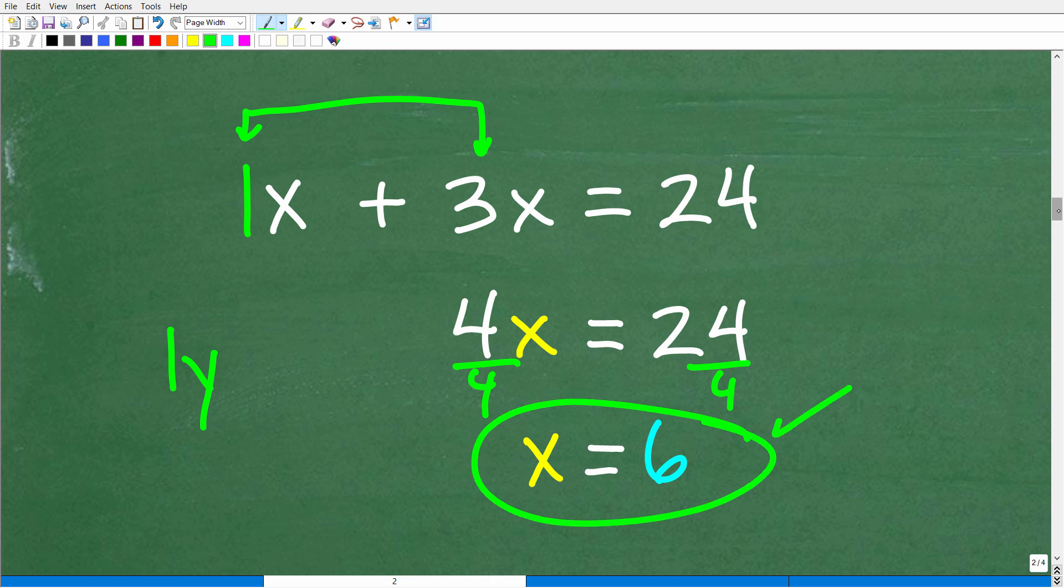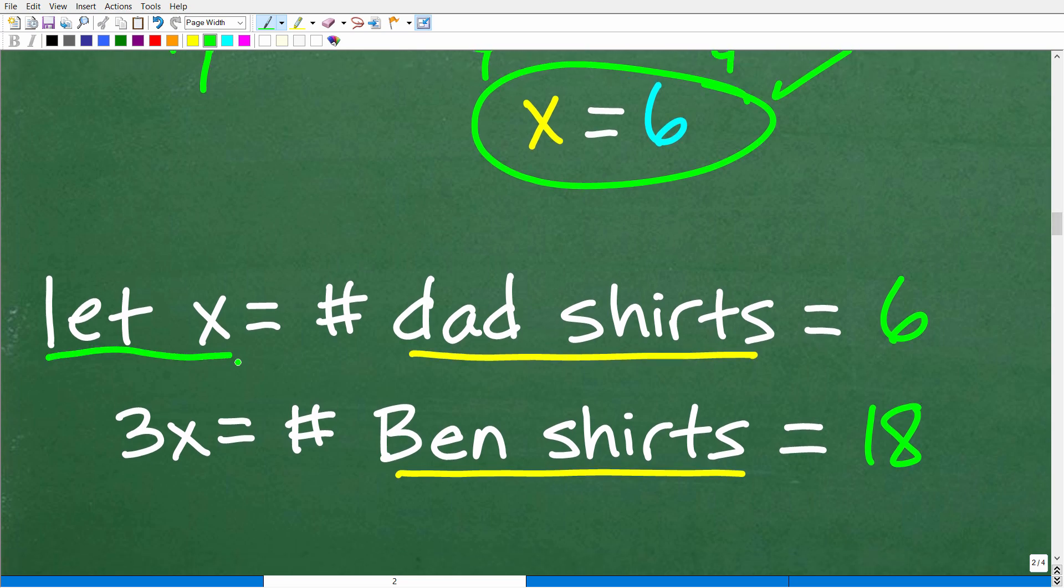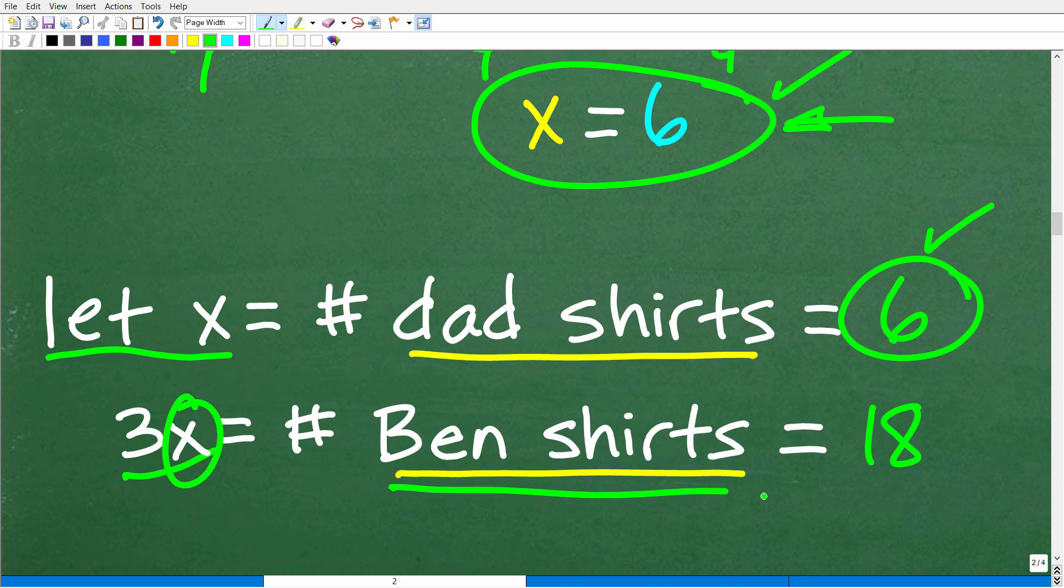X is equal to 6, but what does that mean? We have to go back to our model here. Remember we said we're going to let X equal the number of dad's shirts. We can't fail to answer the question. X was the number of shirts the dad has, so that's 6 and 3X. Now that we know that X is 6, 3 times 6 is the number of shirts Ben has, which is 18. And 6 plus 18 is 24. This all makes sense.